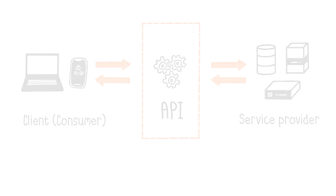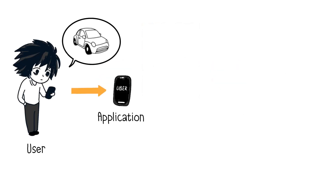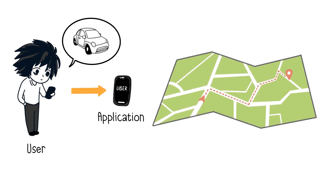To make this clearer, let's take the example of a ride-hailing app like Uber, which lets you request rides from drivers. When you choose your destination address, the application calculates the most optimal route in terms of time between your current location and the destination.